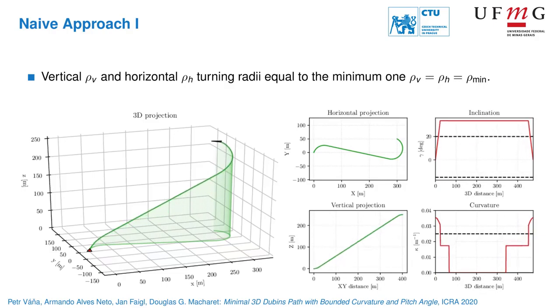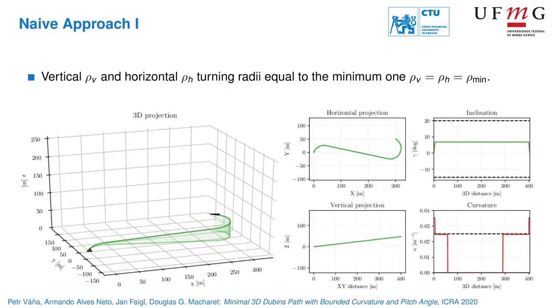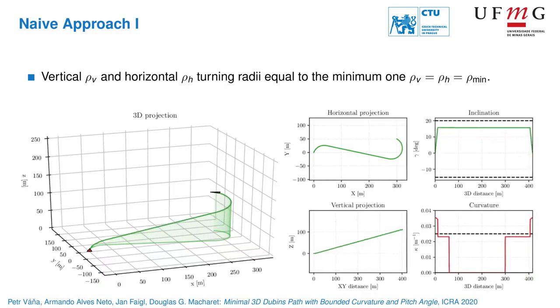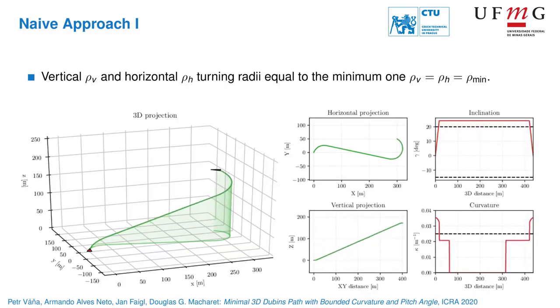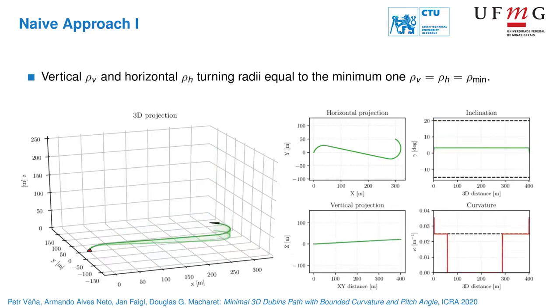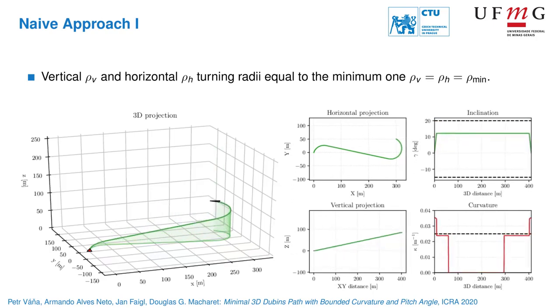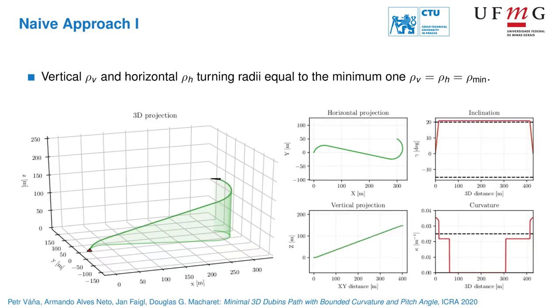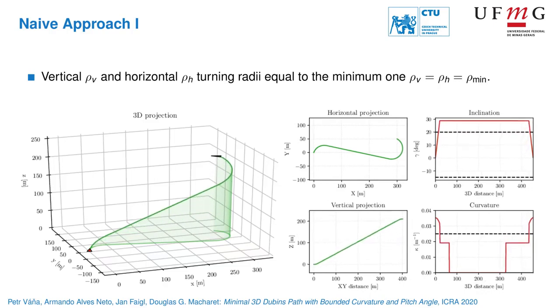Once the altitude difference is increased, both horizontal and vertical turns are applied at the same time and the curvature of the final path goes over the limit. Notice that the pitch angle constraint is not satisfied for large altitude differences using this naive approach.